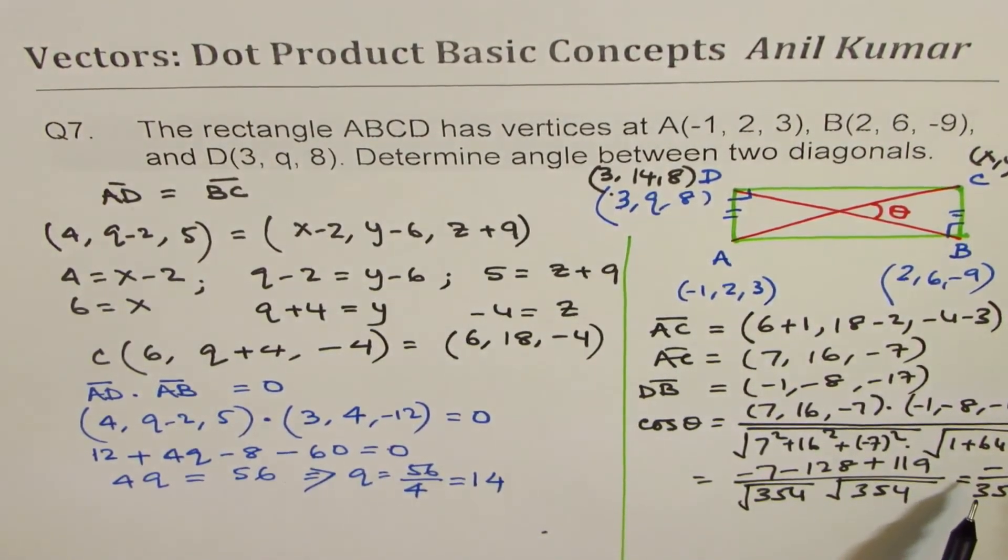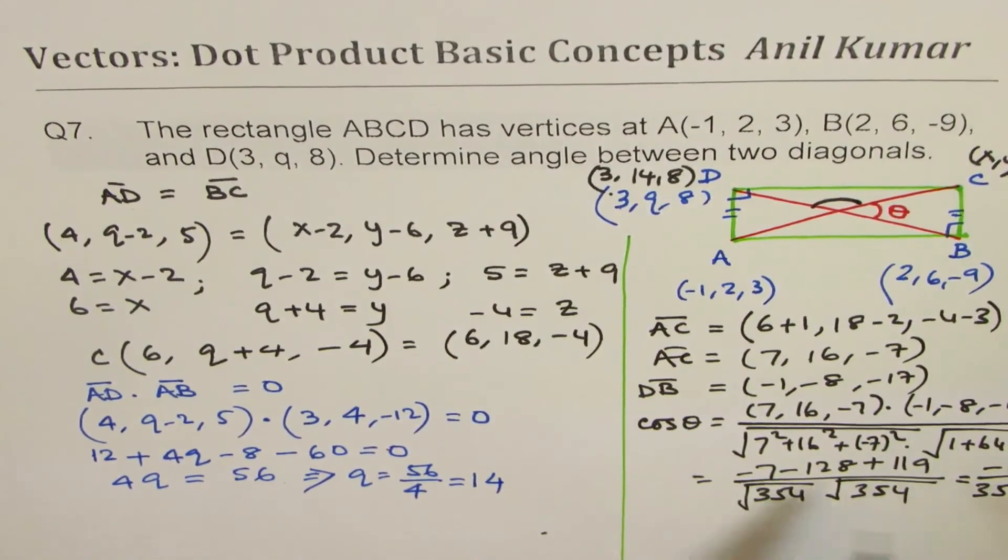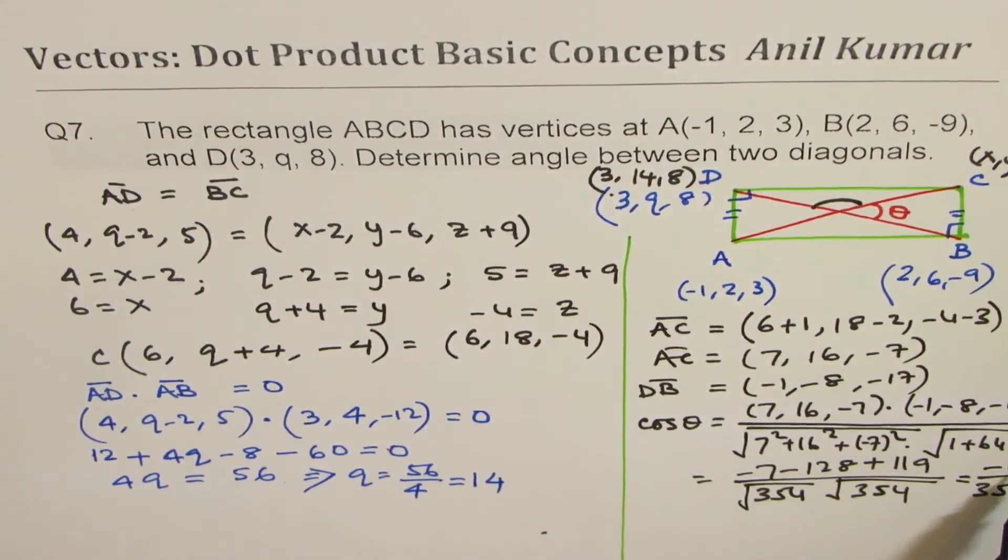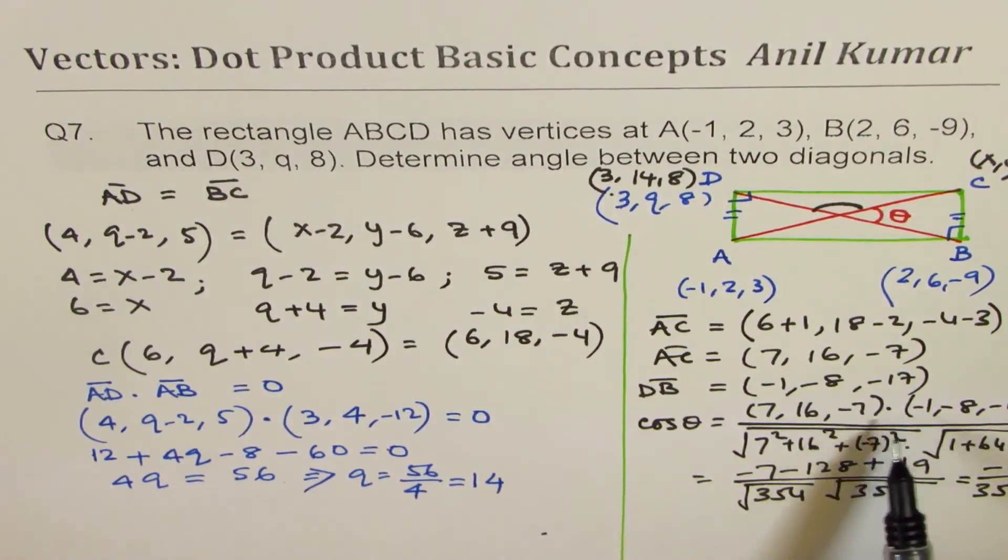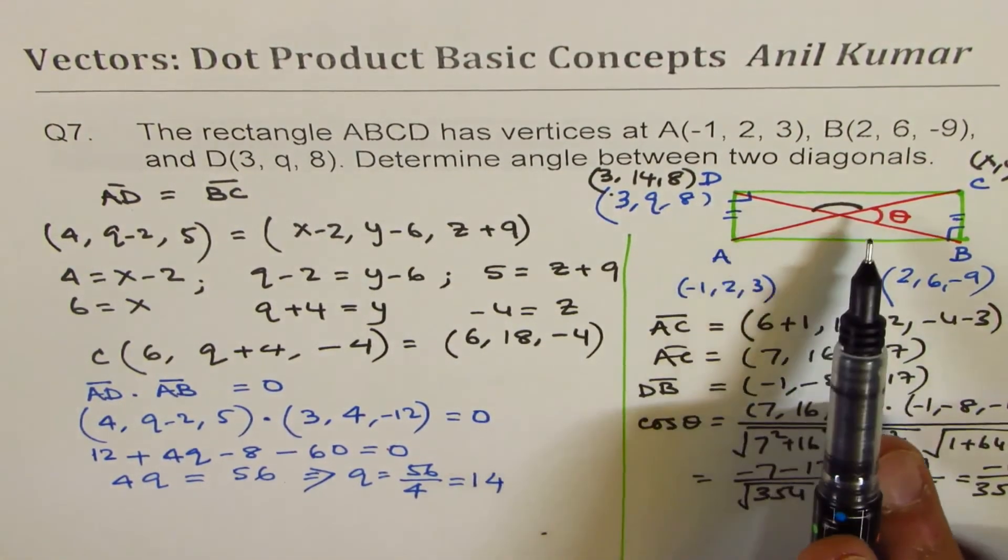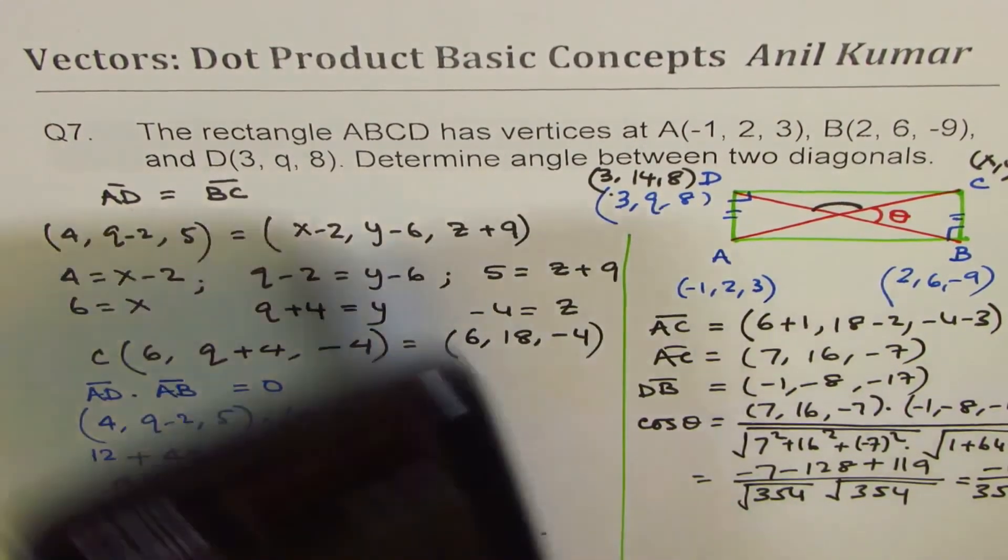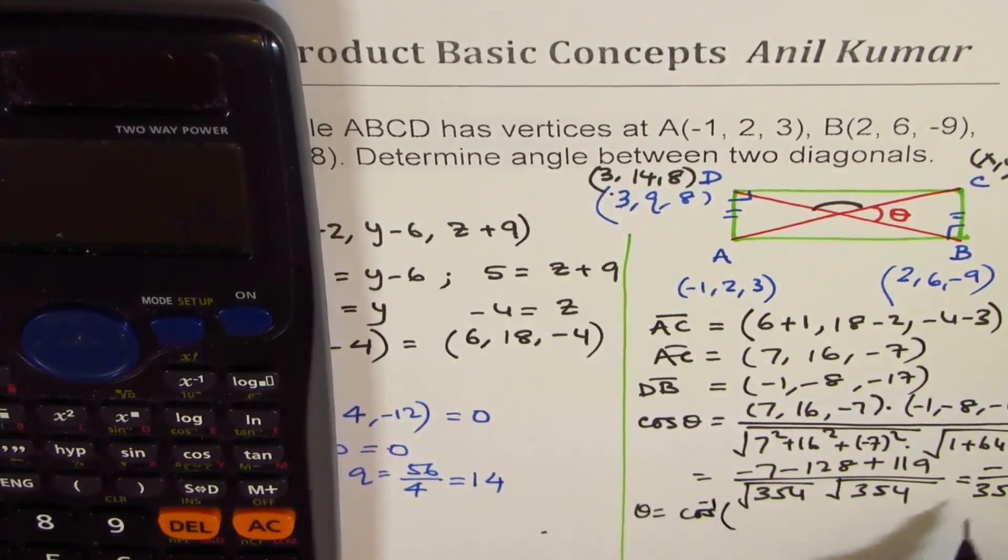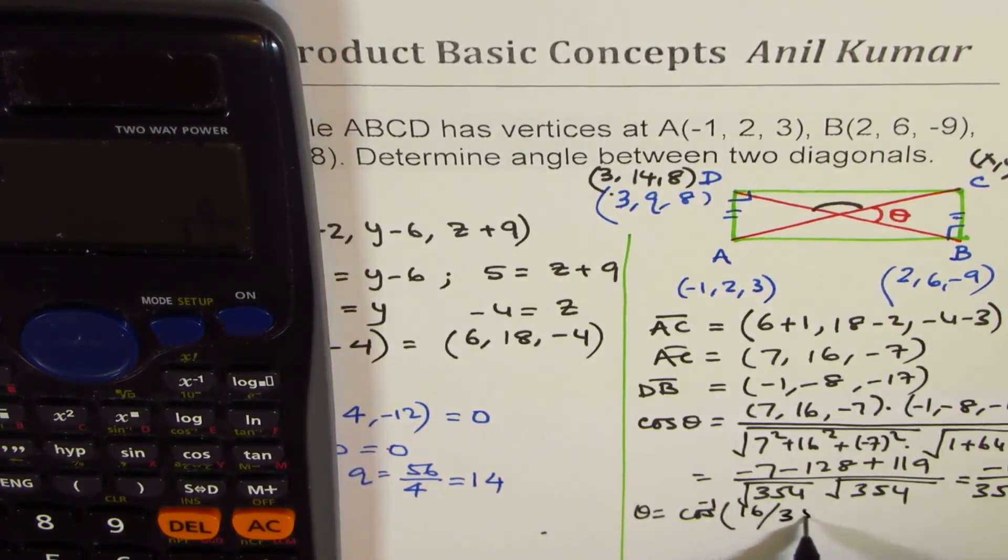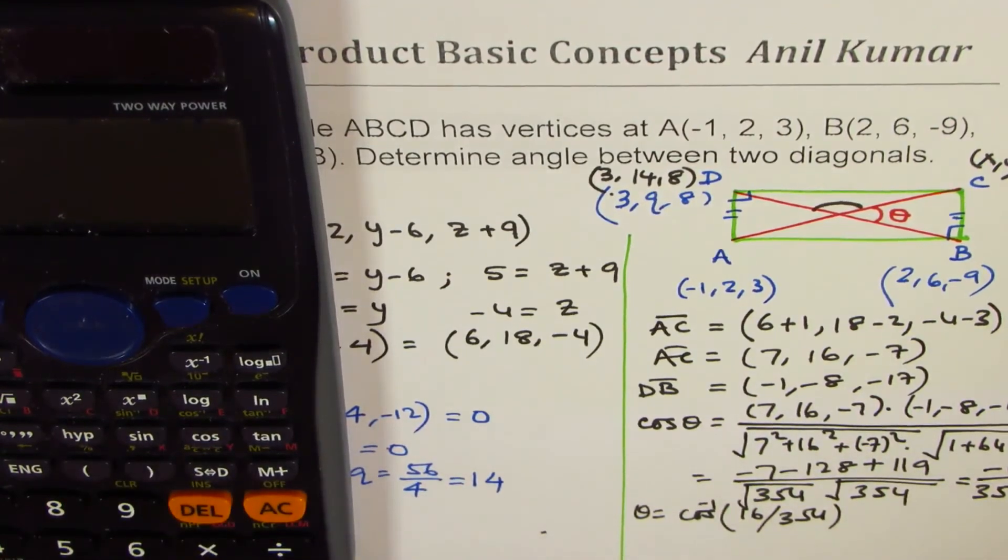Now since this is negative, we are actually finding the obtuse angle. So let me write the acute angle first, which will be positive, because both are the right answers. So we can find θ as cos inverse of 16/354.